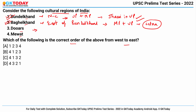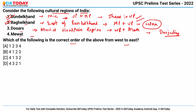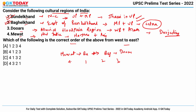Duars is an alluvial floodplain region stretching across West Bengal and Assam; Darjeeling is an important city here. Mewat is a region in northwest India stretching across Haryana and Rajasthan. So the correct order from west to east is: Mewat, Bundelkhand, Baghelkhand, Duars — that is 4, 1, 2, 3. The correct answer is option B.